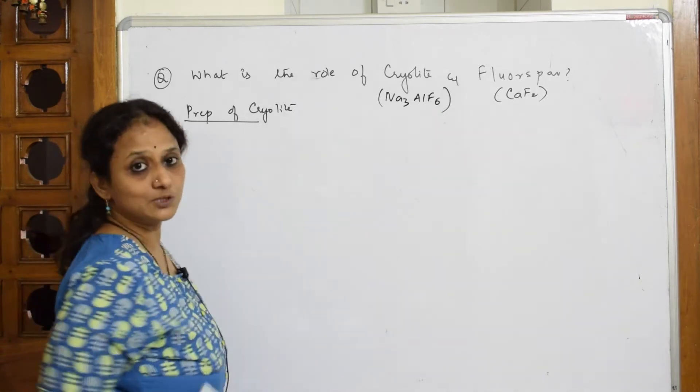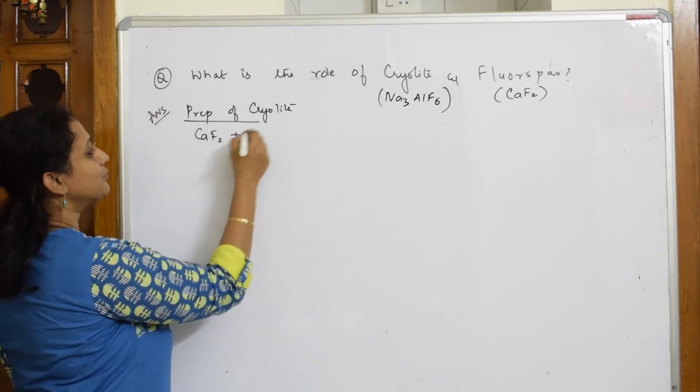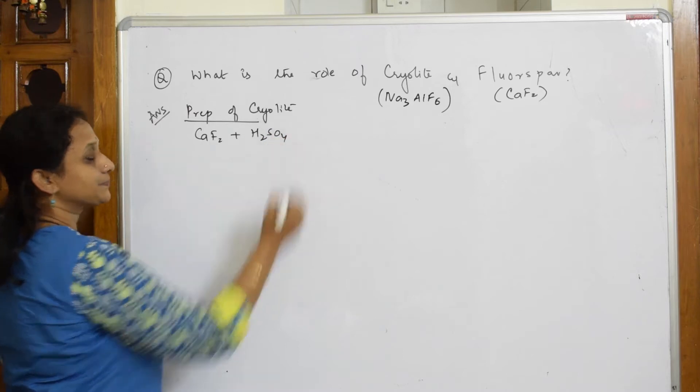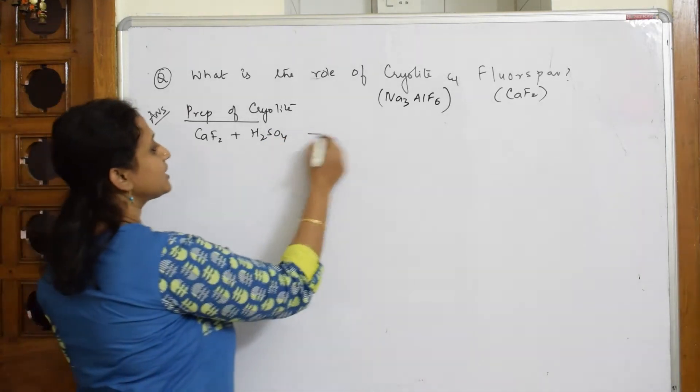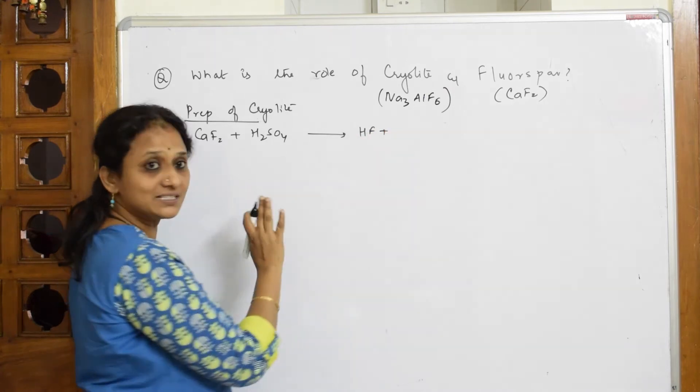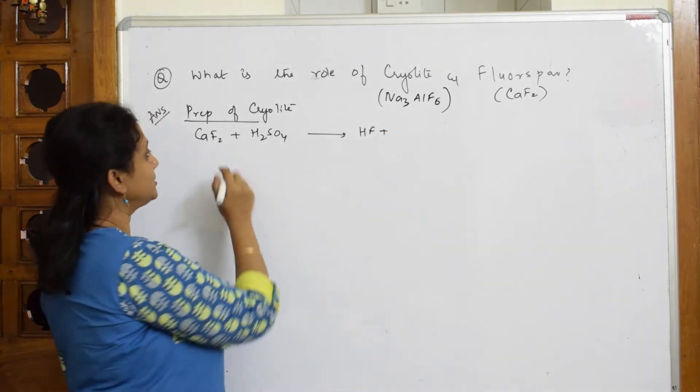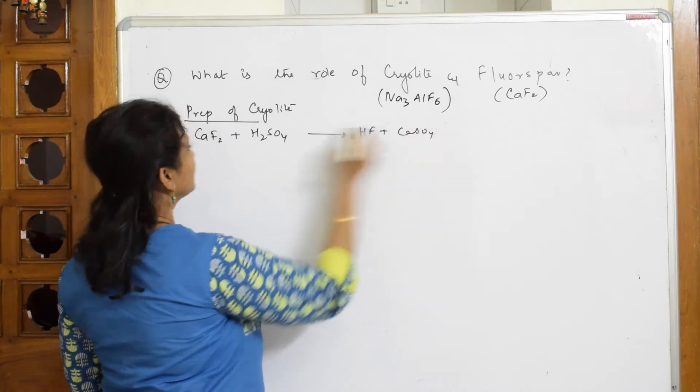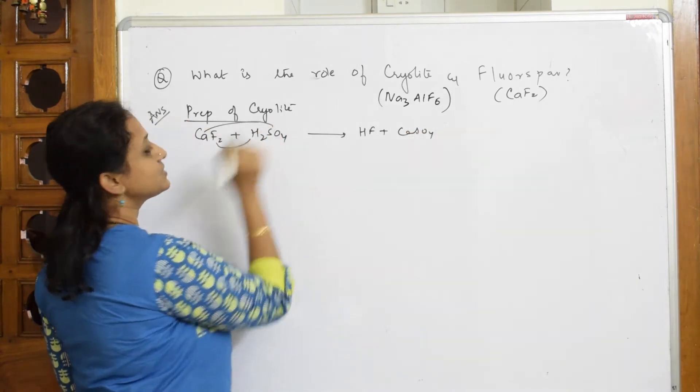Preparation of cryolite. First, we are going to take fluorspar. What is fluorspar? CaF2. I am going to fuse it with sulphuric acid. When I am fusing it with sulphuric acid, you get two compounds. One is hydrogen fluoride, and the leftover is calcium sulphate.